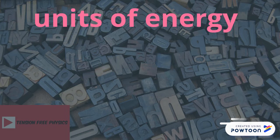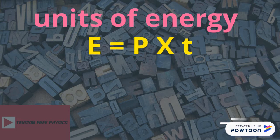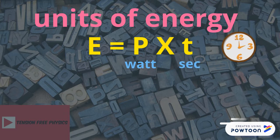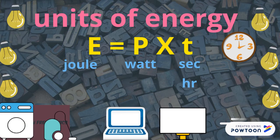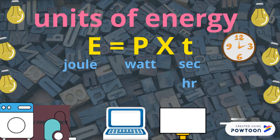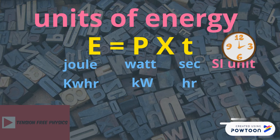We can find the energy by using the formula energy = P × T. If the power is in watts and the time is in seconds, the energy will be expressed in watt-seconds, or simply joules. However, we usually use electric appliances for hours and use a lot of them together, so the power will be better expressed in kilowatts, and the energy will be expressed in kilowatt-hours. Joule is the SI unit of energy, whereas the kilowatt-hour is considered the commercial unit of energy.